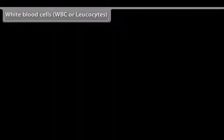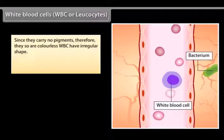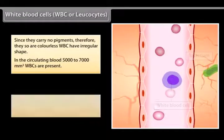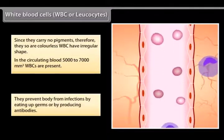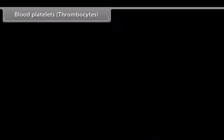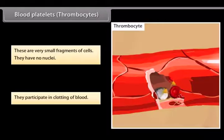White blood cells (WBC or leukocytes) carry no pigments and are therefore colorless. WBCs have an irregular shape. In circulating blood, 5,000 to 7,000 per mm³ WBCs are present. They prevent the body from infections by engulfing germs or by producing antibodies. Blood platelets (thrombocytes) are very small fragments of cells with no nuclei, and they participate in the clotting of blood.